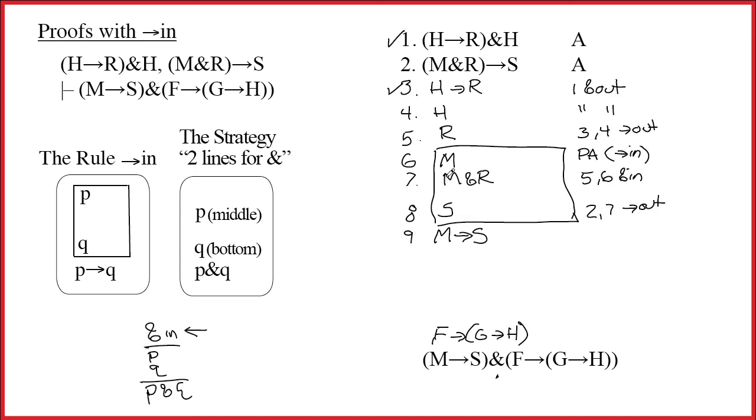So, line 9, that's going to be 6 through 8 and then the name of the rule arrow in. Hey, fantastic! We're halfway done at this point. The box itself showed us that if we have m, we can get to s. And that's what this says. If you have m, then you get s.